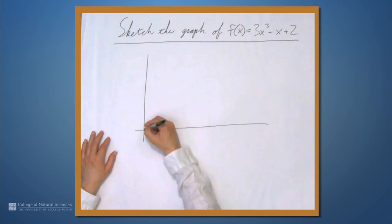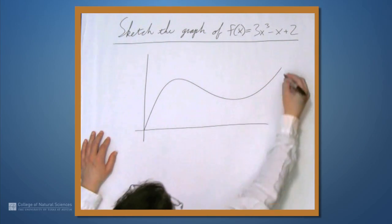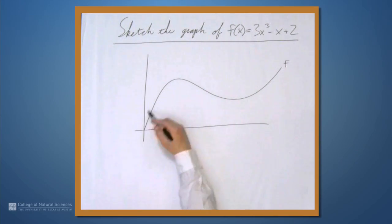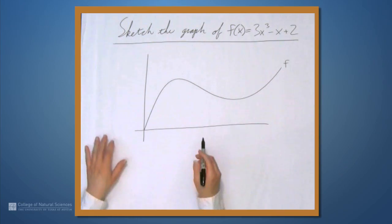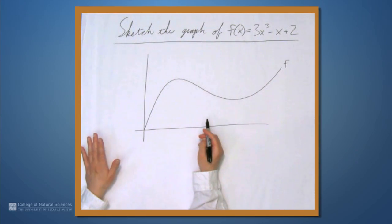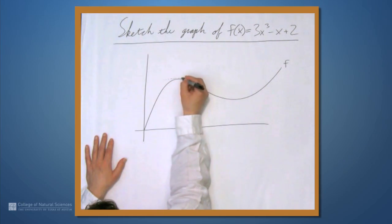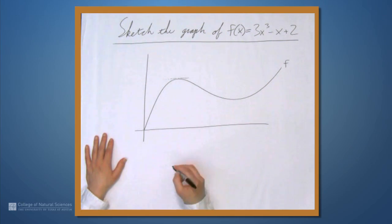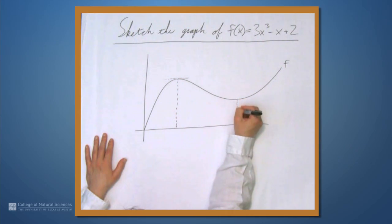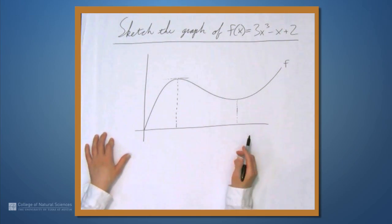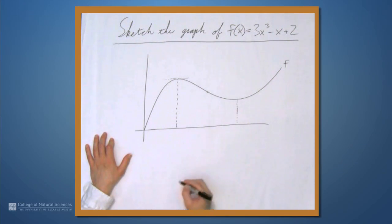Suppose we have something that looks like this — let's call this function f, though it's not going to be the same f. It looks like a cubic. We think about f', which is the slope of the tangent line. Here's a special point where the slope of the tangent line is 0, and here's another place where the slope is 0. Both of these are determined by f'. There's another notable point right here.